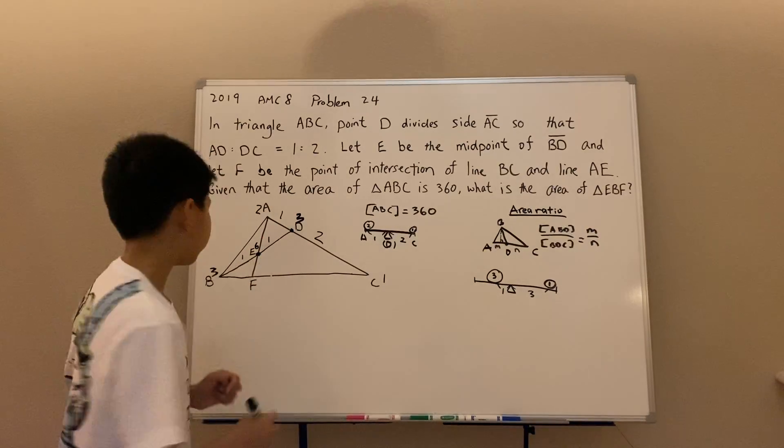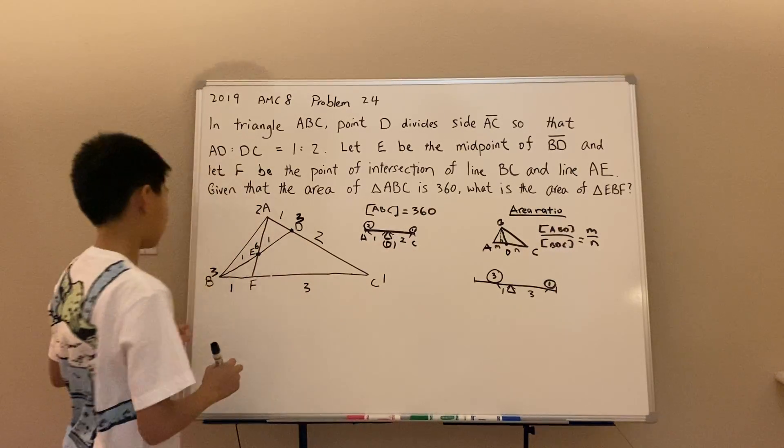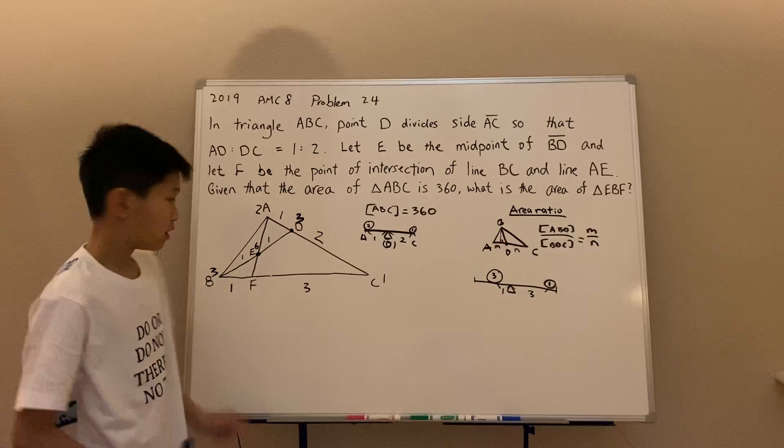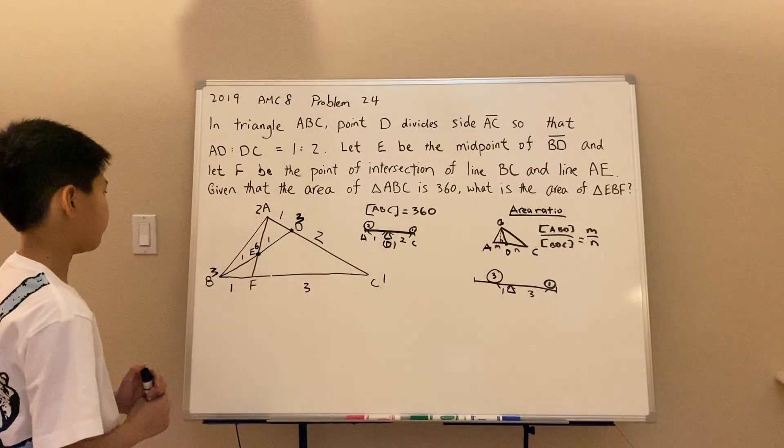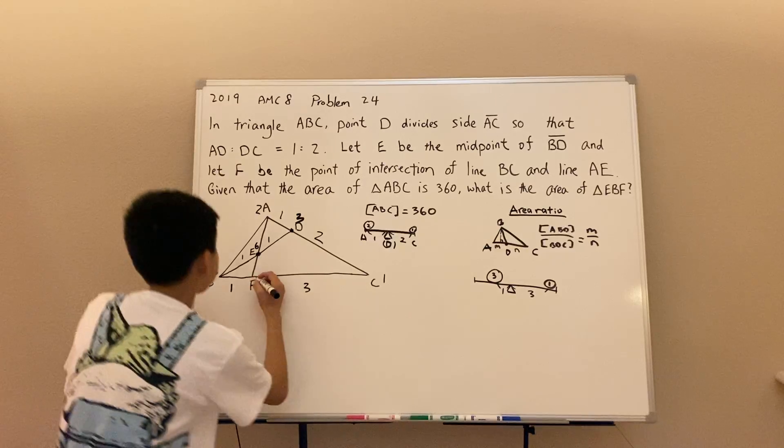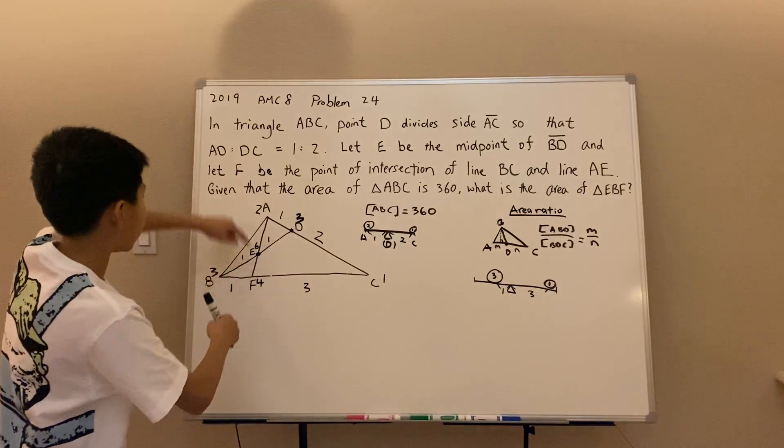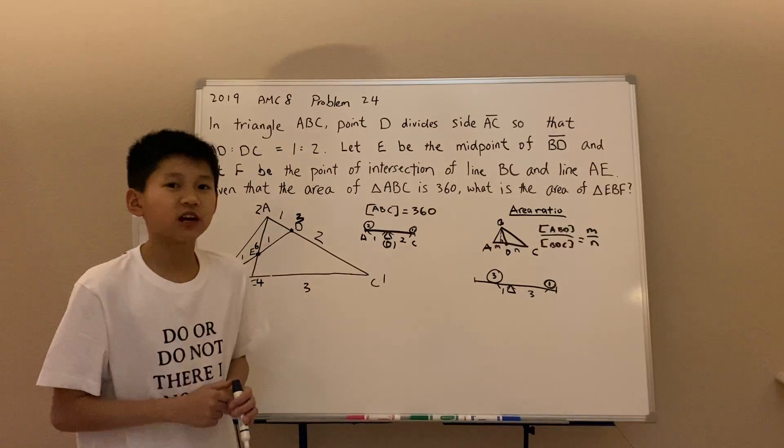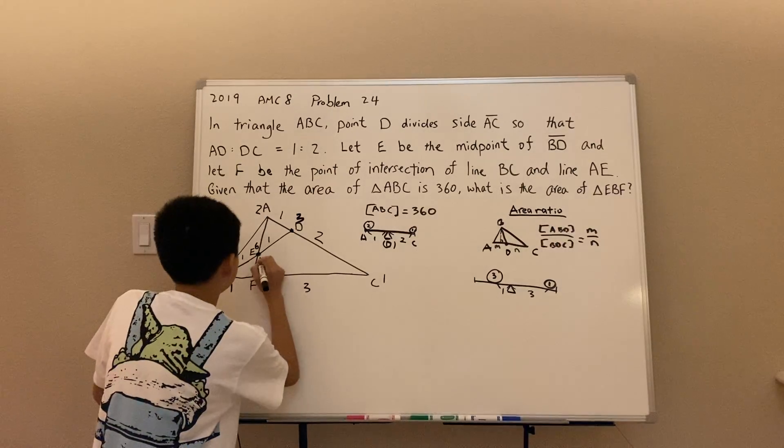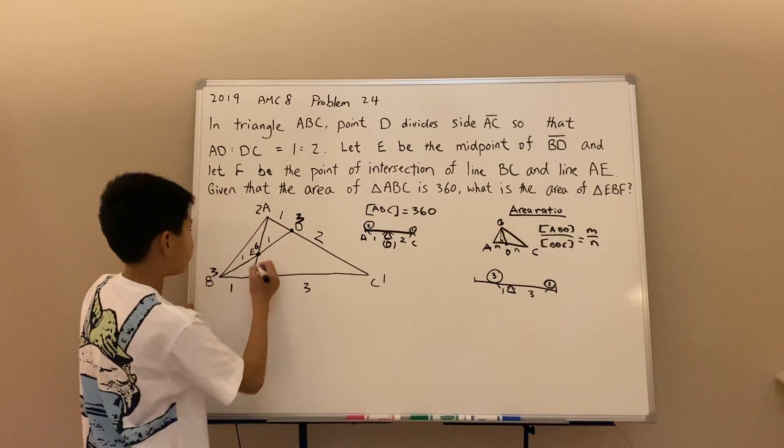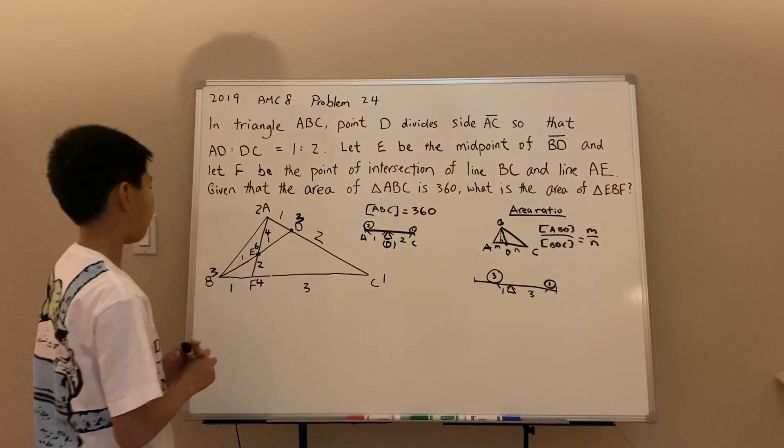We also know that the ratio of BF to FC is one to three to balance the seesaw BFC out. Because three times one equals three times one. It's kind of like this example here. So the combined mass is just four. And when we look at the seesaw of AEF, four plus two is six. So we can check our answer is right. That means that the ratio of EF to AE is two to four to balance the seesaw out.